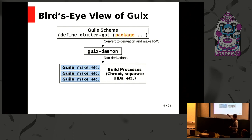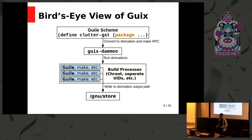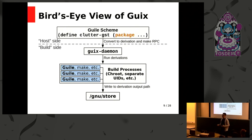I'm not showing the script here, but there would be one derivation, another derivation — three derivations total — all running make and other things to build software, all being orchestrated by a Guile script. We generally speak of the host-side code as the code living outside the scope of the build container, and the code that runs inside the isolated build environment as the build-side code.